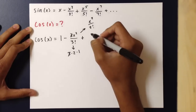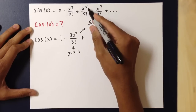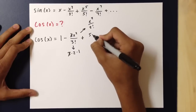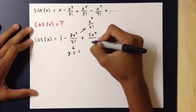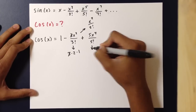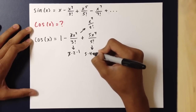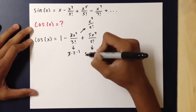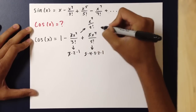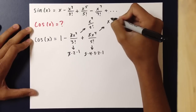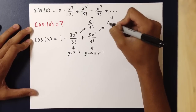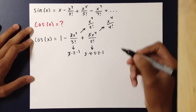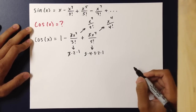Let's try another one. The derivative of x to the fifth over 5 factorial would be 5x to the fourth over 5 factorial, which is 5 times 4 times 3 times 2 times 1. The 5's cancel, and this becomes x to the fourth over 4 factorial. And that continues on and on.